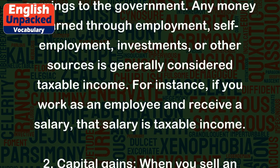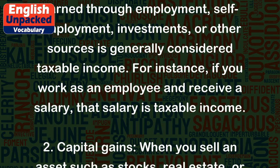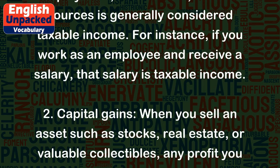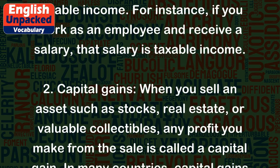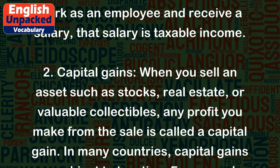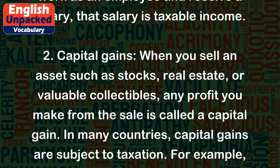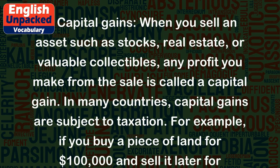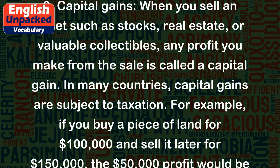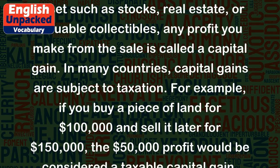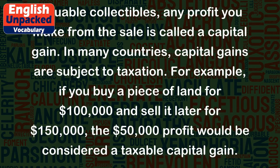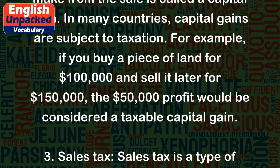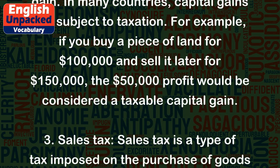2. Capital gains. When you sell an asset such as stocks, real estate, or valuable collectibles, any profit you make from the sale is called a capital gain. In many countries, capital gains are subject to taxation. For example, if you buy a piece of land for $100,000 and sell it later for $150,000, the $50,000 profit would be considered a taxable capital gain.